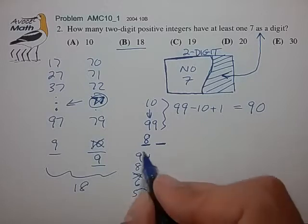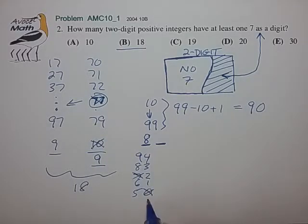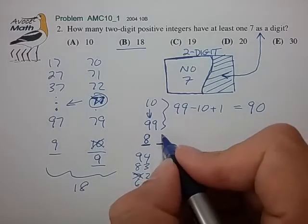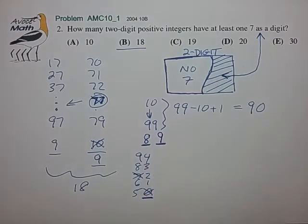Now for the units digit, we basically have the same choice. We don't want to choose 7. However, for the units digit, we can include the number 0. So we have essentially 9 choices for the units digit.